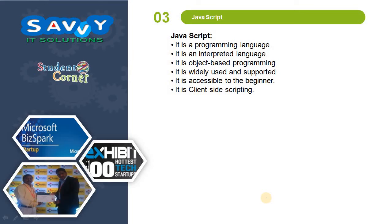Next is JavaScript. It is a programming language, an interpreter language, and object-oriented programming. It is widely used, supported, and accessible to beginners. It is a client-side scripting language, meaning client-side validations are done through JavaScript.